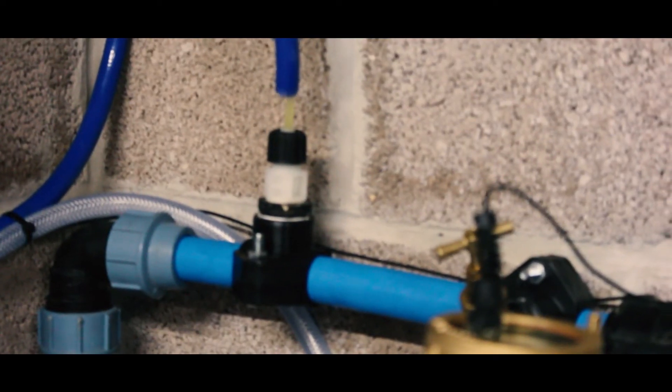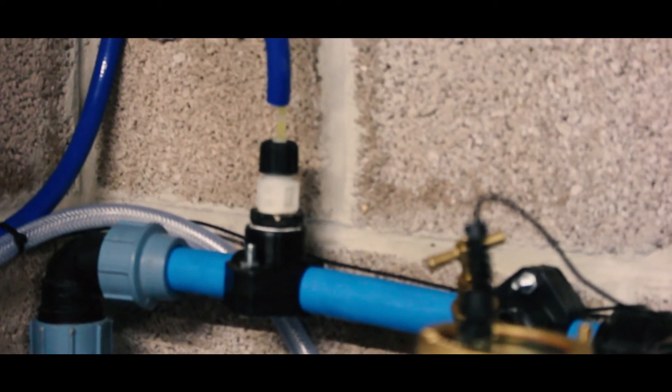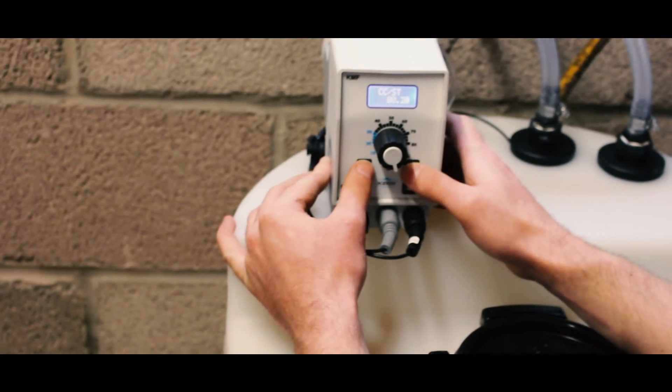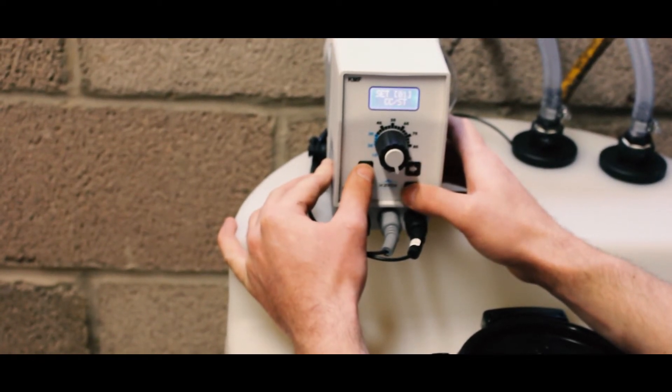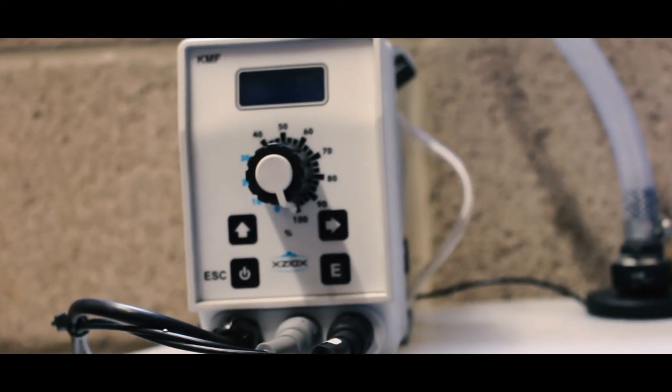Now we can see the solution coming through the pipe and here we can see it going through the injection point at a constant level. We can measure the level of Xiox within the water by using a digital measuring kit for accurate measuring.